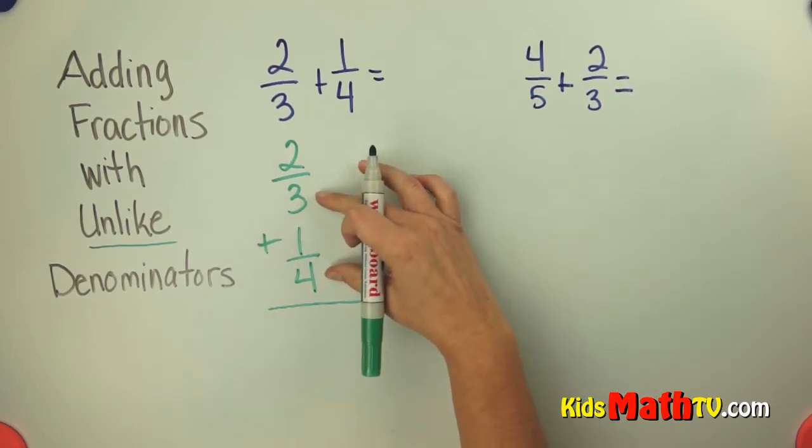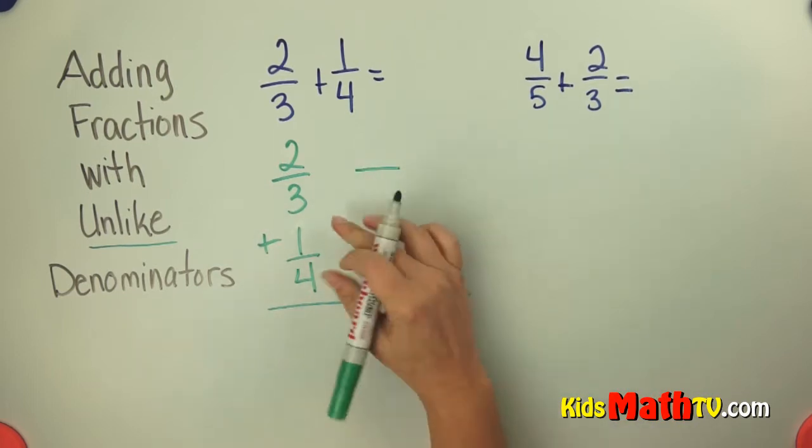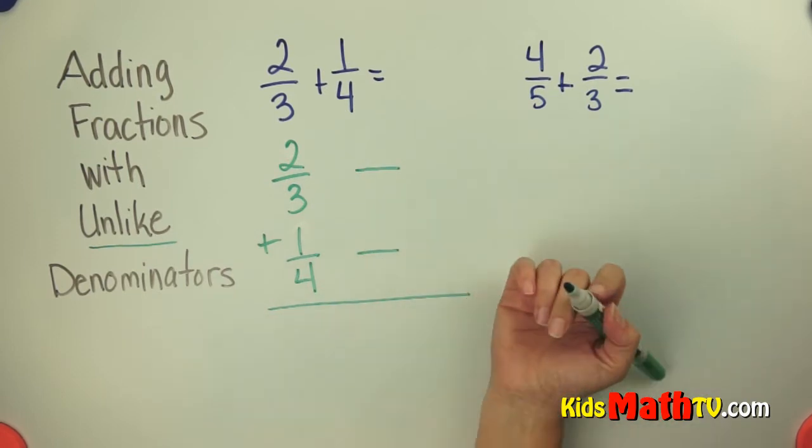Now I cannot add fractions with unlike denominators so I need to make a common denominator. So I'm going to decide what's a multiple of both 3 and 4. I'm going to use the number 12.